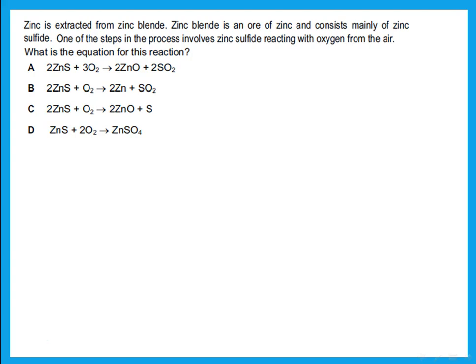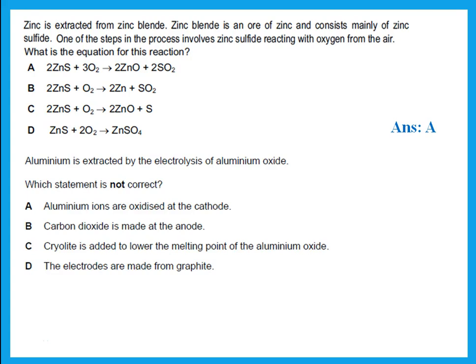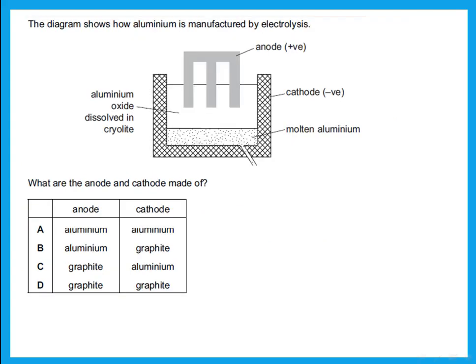If you look at which one is correct with the correct balancing, you should realize that A is correct. The next question: aluminium is extracted by the electrolysis of aluminium oxide — which statement is not correct? The options include aluminium ions are oxidized, carbon dioxide is made at the anode, and cryolite is added to lower the melting point. All of them are correct except A, same as the first question.